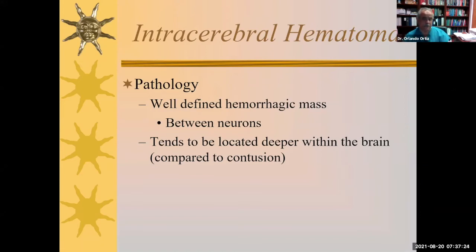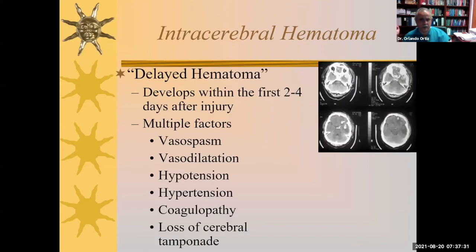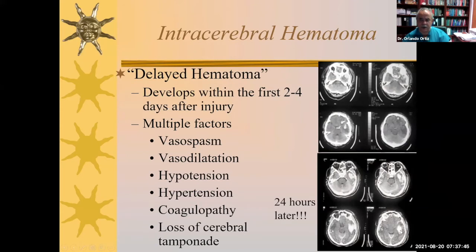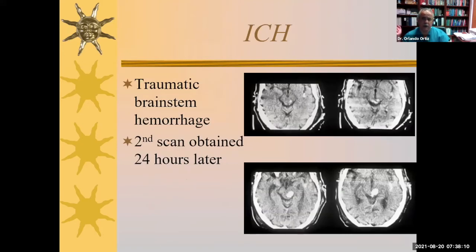A hematoma is a well-defined hemorrhagic mass that tends to displace neurons, occurs between neurons, and tends to be located deeper within the brain. Sometimes it's hard to separate from a contusion, but this one is deeper, and over time these can become quite sizable — one case shows marked growth at 24 hours. Multiple factors are involved in the evolution of these hematomas, including coagulopathy and abnormalities in vascular tone. These hemorrhages can also involve the dorsolateral brainstem — a focal collection of blood grew within 24 hours at the level of the midbrain in one patient.